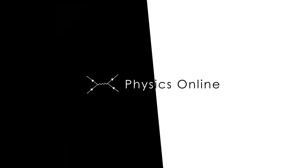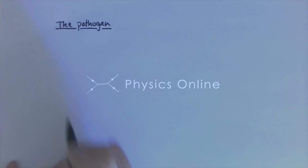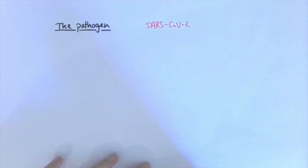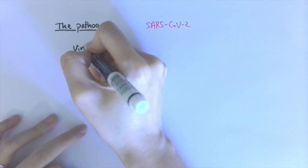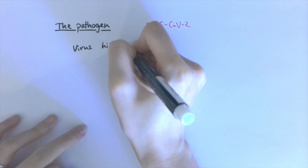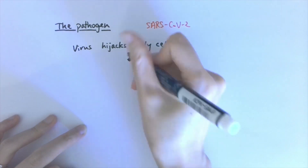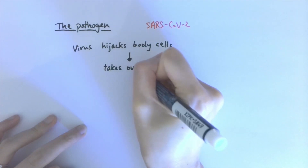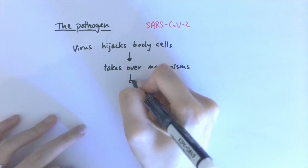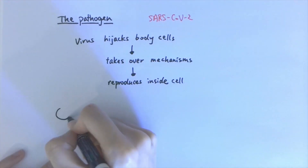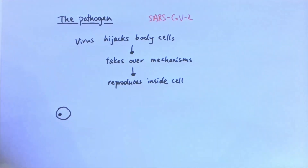First, let's talk about the pathogen. The coronavirus pandemic is caused by a pathogen called SARS-CoV-2, short for Severe Acute Respiratory Syndrome Coronavirus 2. As the name implies, it's a virus, meaning it hijacks the body's cells and takes over their mechanism to reproduce inside them. The body cells are destroyed in the process, which is how it makes us ill.